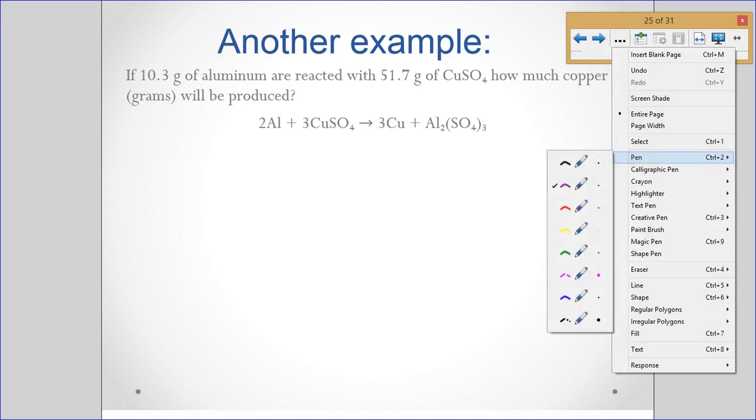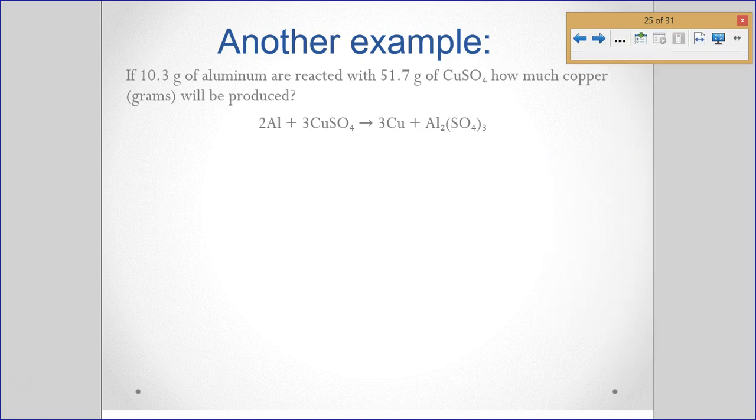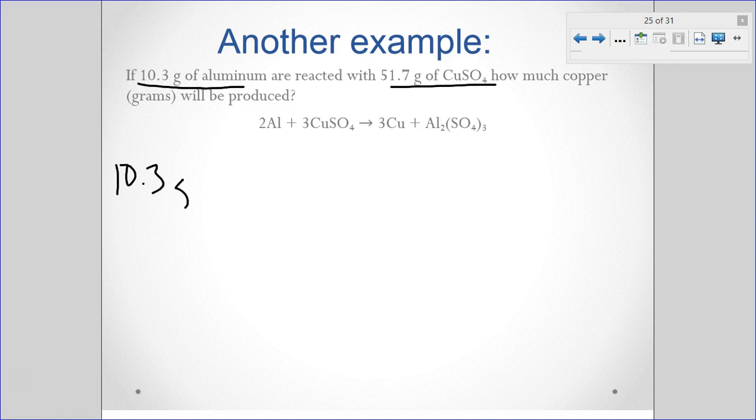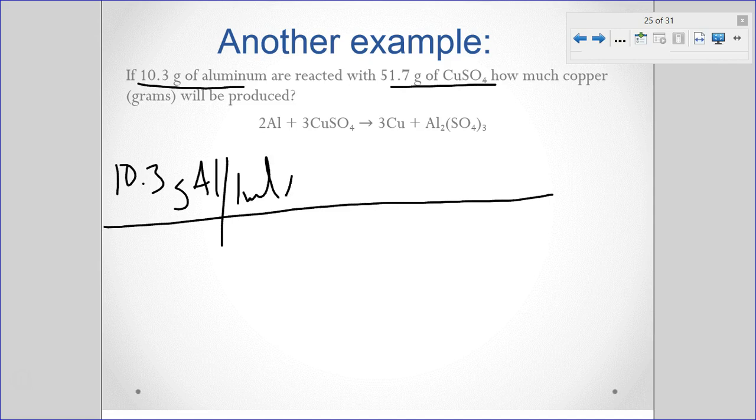Let's look at another example. If 10.3 grams of aluminum react with 51.7 grams of copper sulfate, how much copper will be formed? Similar idea. We have two givens, which means two tables. So, let's go ahead and jump into it. We'll make our first table. 10.3 grams Al. And it says we're looking to see how much copper we're going to make.